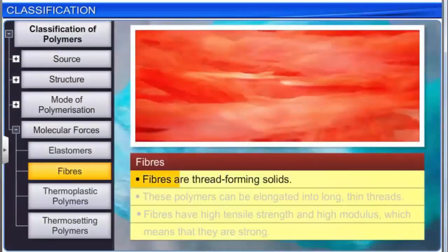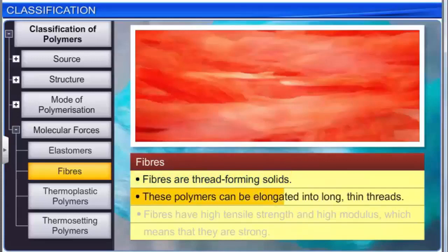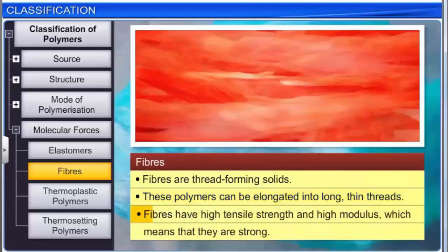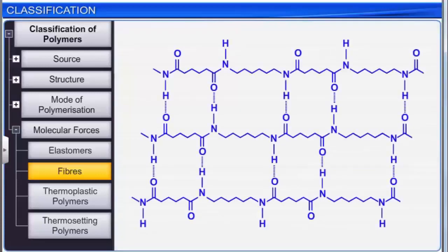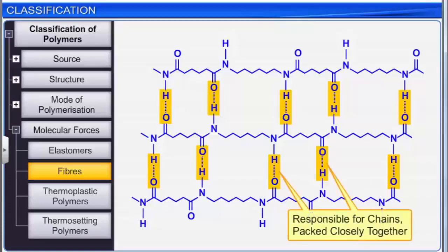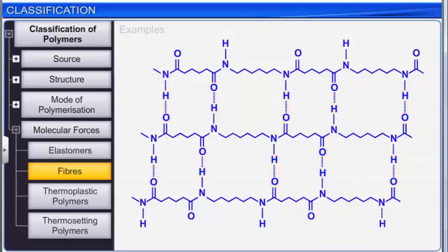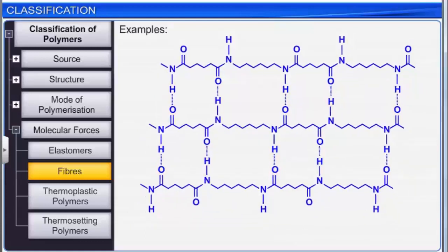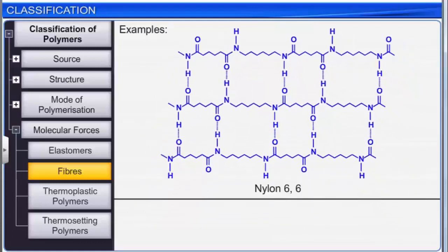Fibers are thread-forming solids. Since these polymers can be elongated into long, thin threads, they have high tensile strength and high modulus, which means they are strong. Hydrogen bonding exists between the chains, because of which the chains are packed closely together. Examples of polymers that form fibers are polyamides such as nylon-6,6 and polyesters.